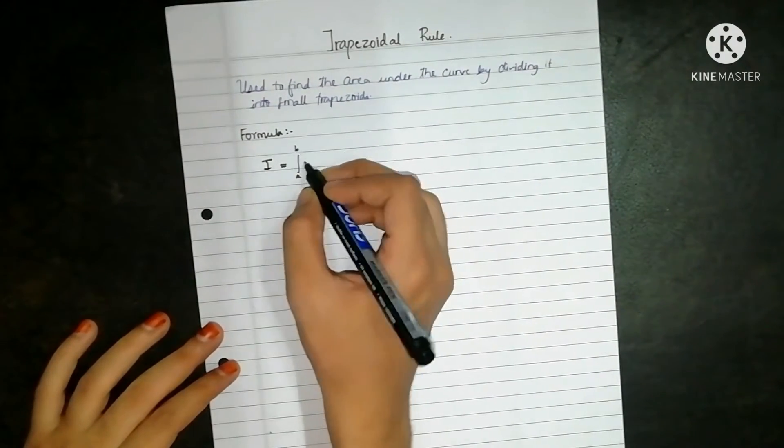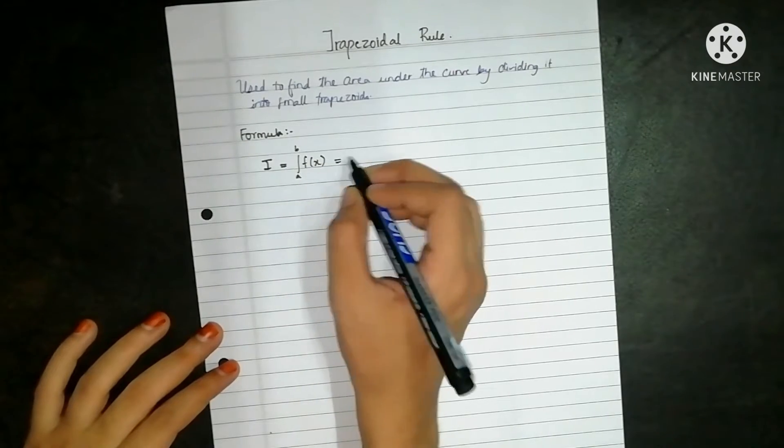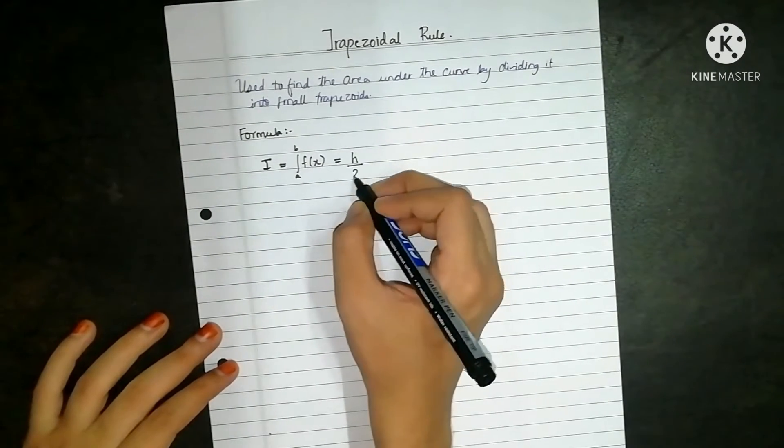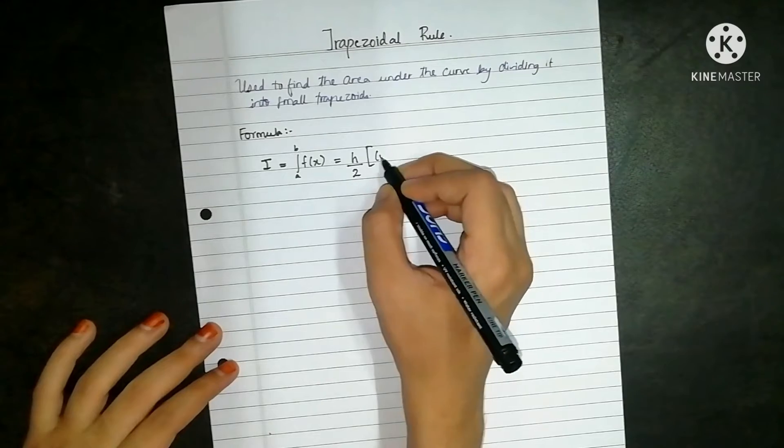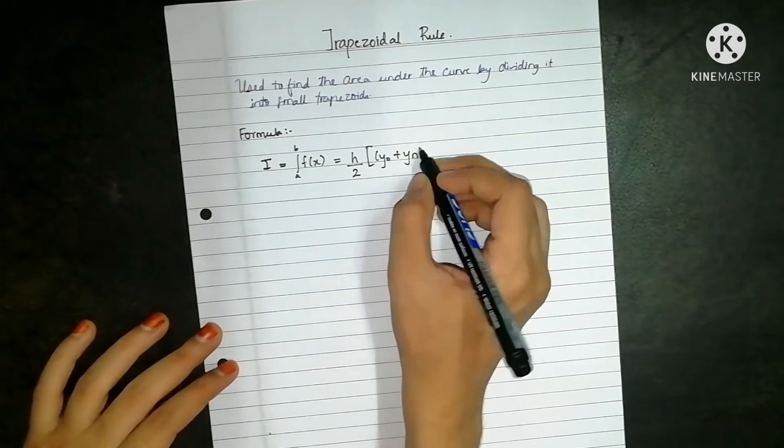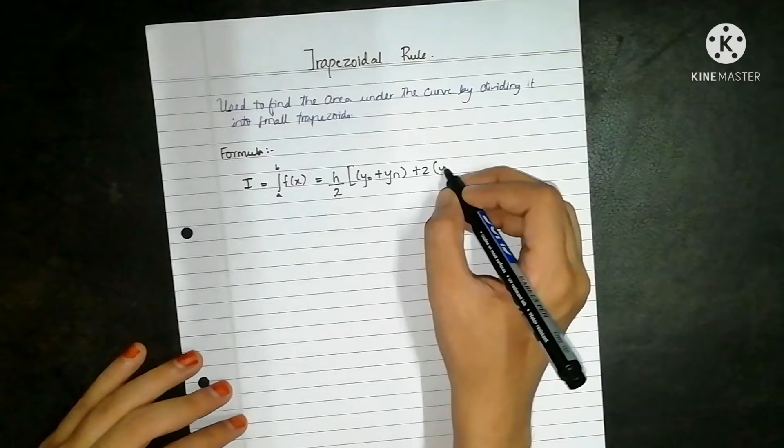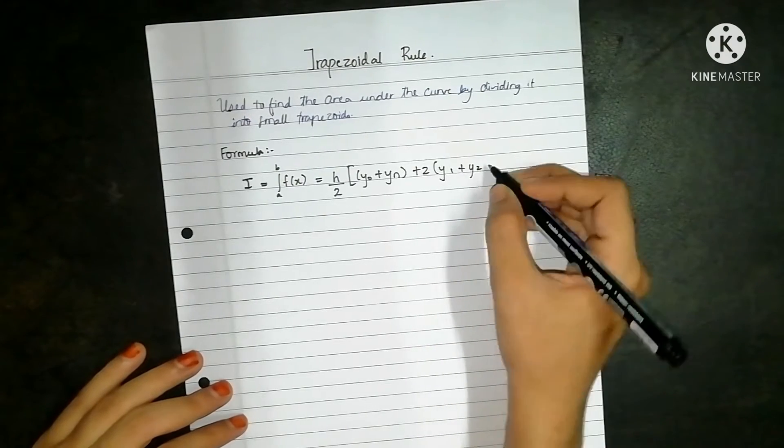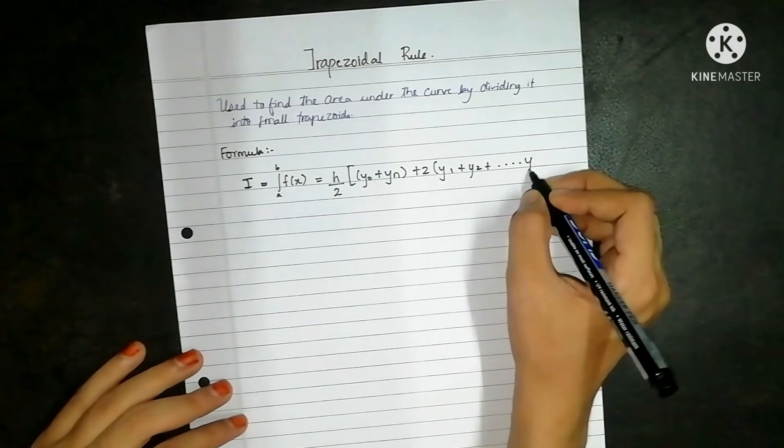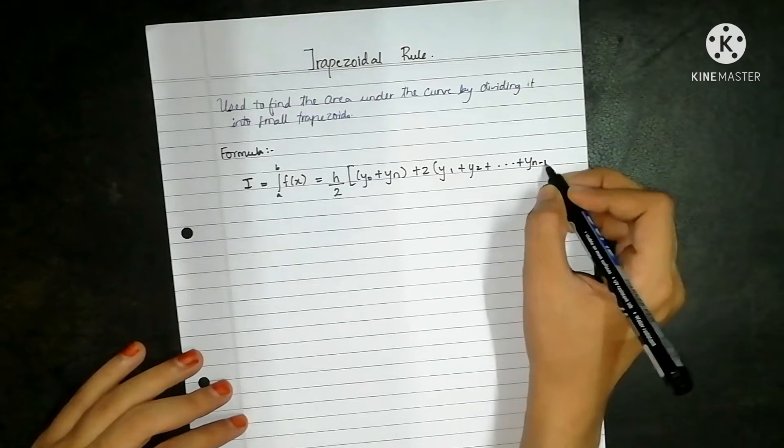For any function, i is equal to h by 2, y0 plus yn plus 2 times y1 plus y2 up till y of n minus 1.